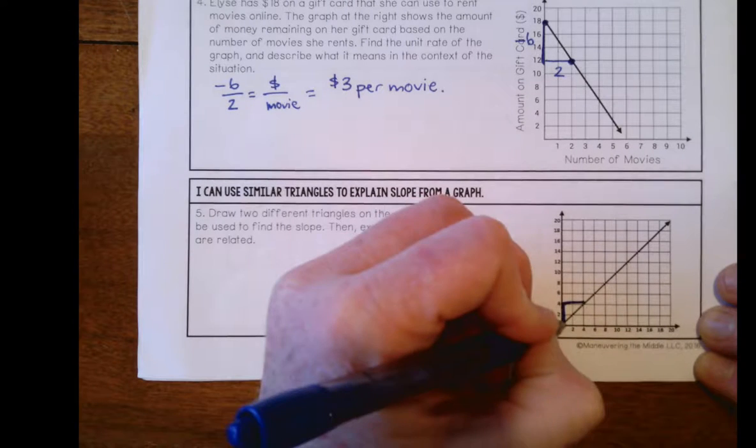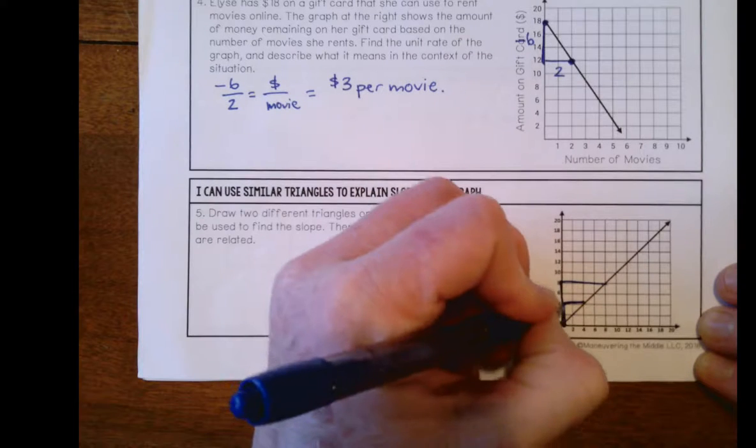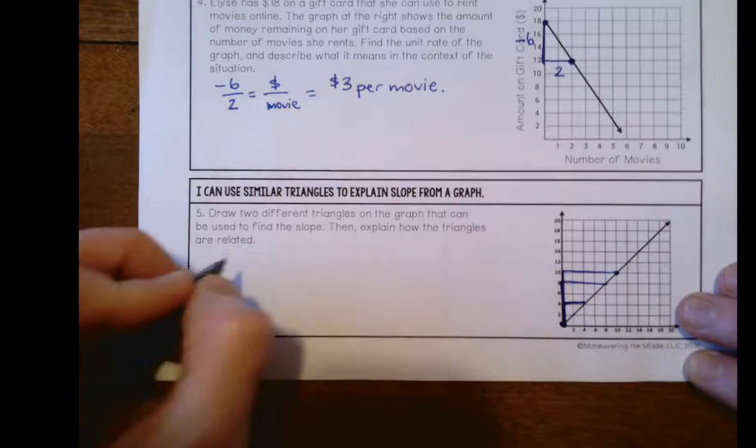Or I could go up 8 over 8. Or I could have gone up 10 over 10.